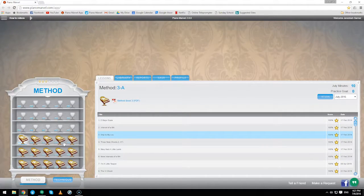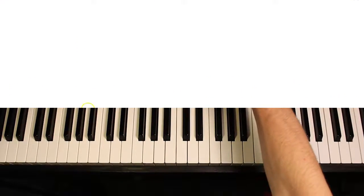Here we are in the 3A Trophy. What we're going to do is we're going to take a look at number 2 and 3. Interval of a 6th and skip to my loop. Let's go ahead and open up number 2.